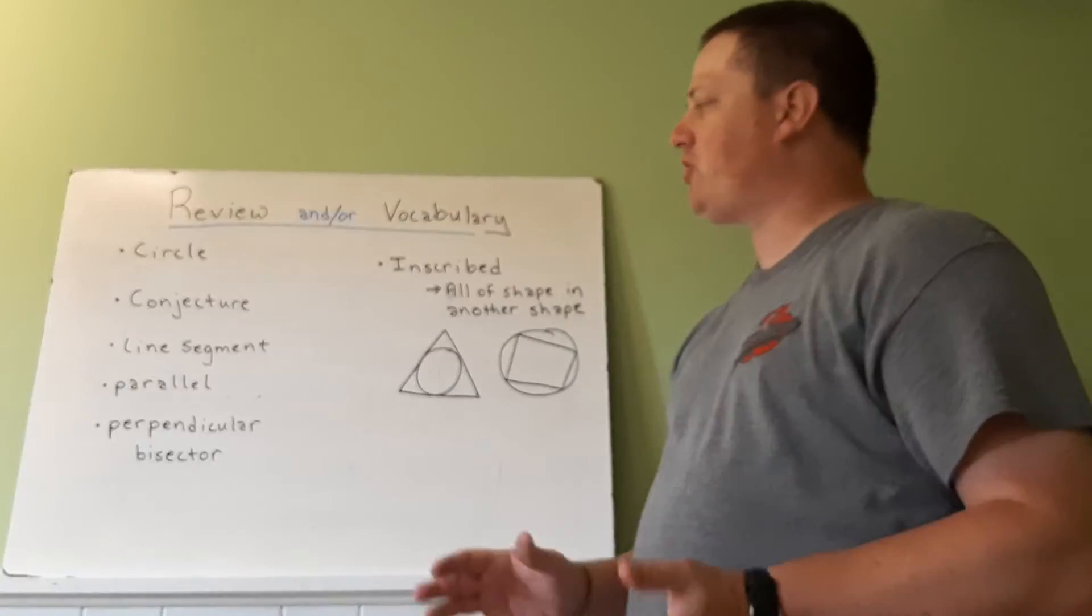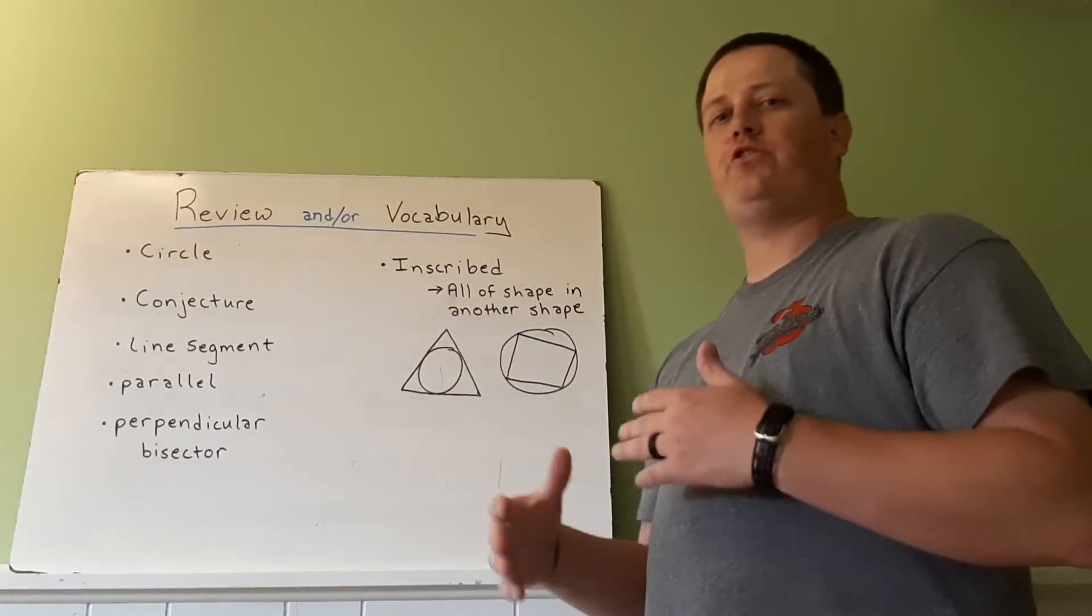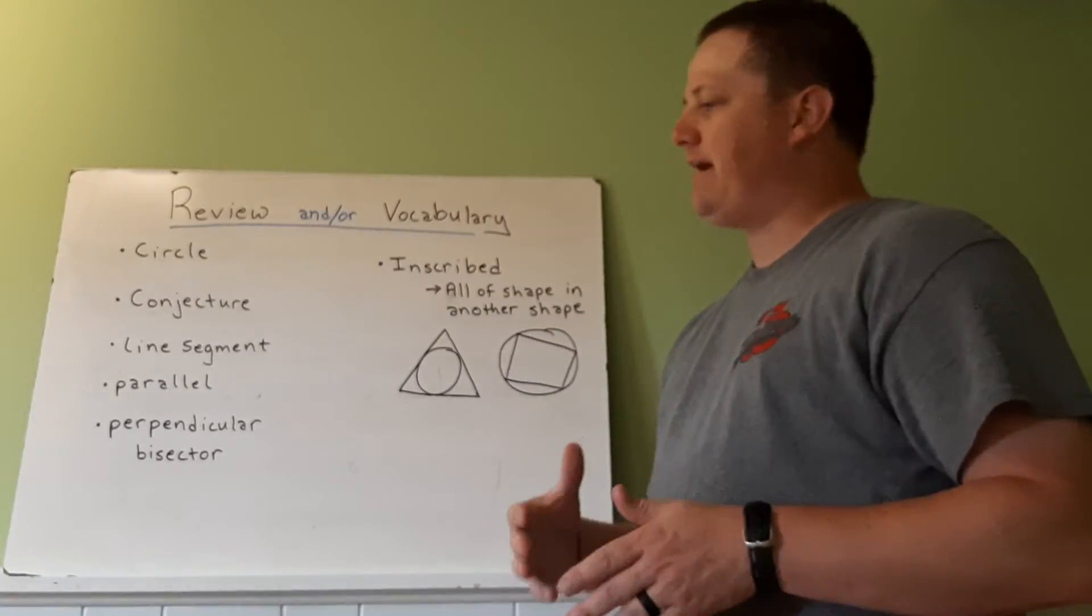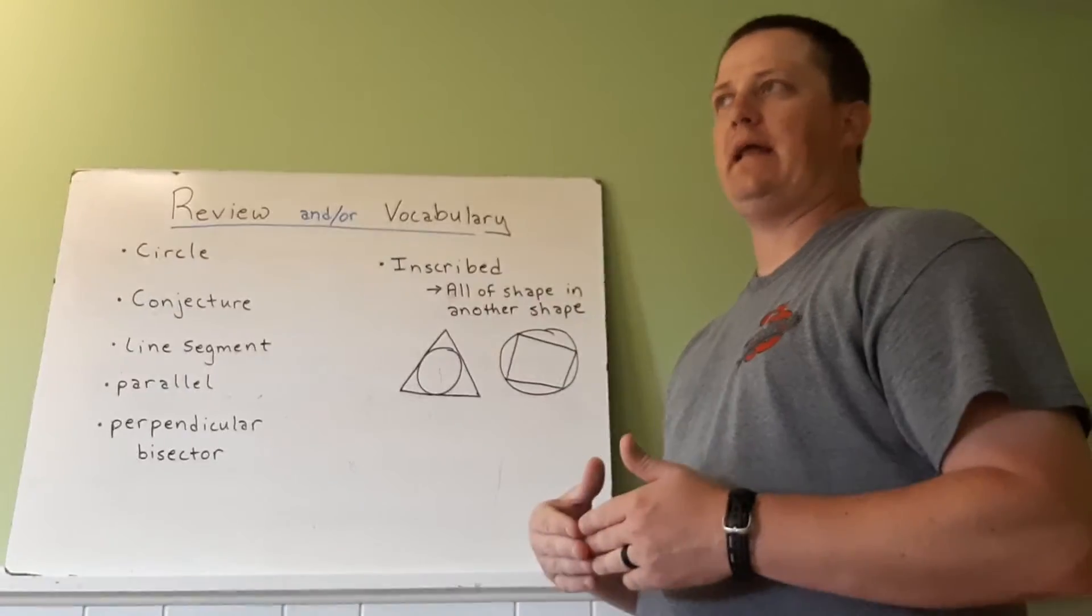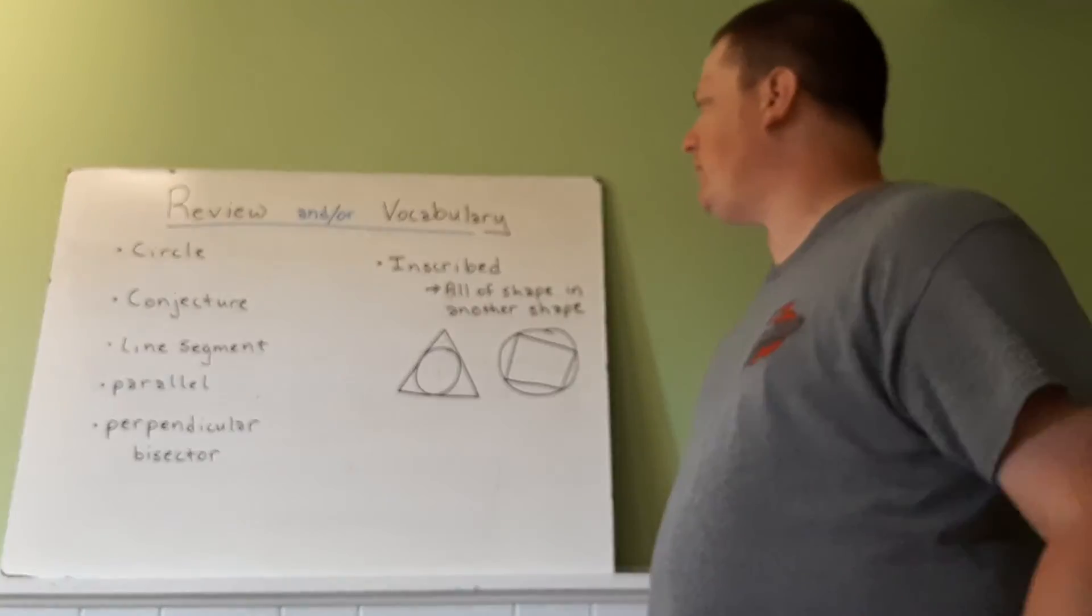Parallel are two lines that will never cross—they have the same slope. Perpendicular bisector are two lines or segments that cross and make a 90-degree angle and divide one of them into two equal parts.